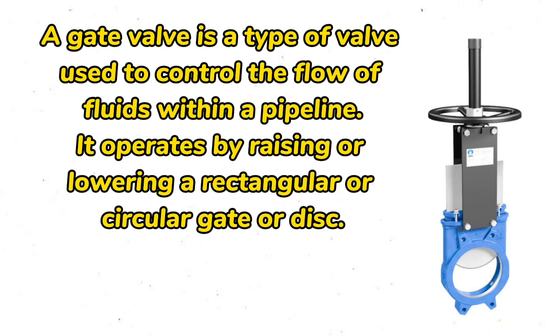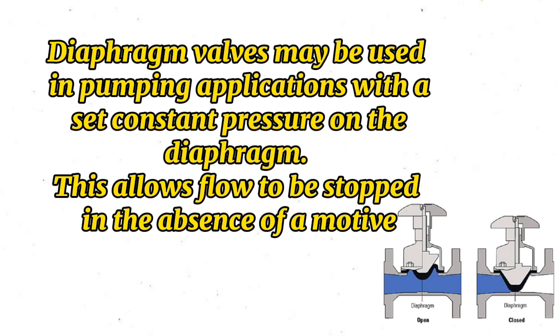A gate valve operates by raising or lowering a rectangular or circular gate or disc. Number four: diaphragm valves. Diaphragm valves may be used in pumping applications with a set constant pressure on the diaphragm. This allows flow to be stopped in the absence of a motive force.